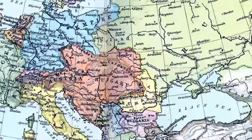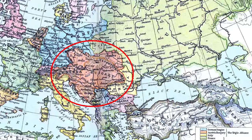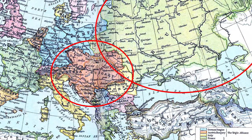Ukraine started in the 20th century as a non-existent country, meaning that it was not a sovereign nation. What is now Ukraine used to be part, in the west, of the Austro-Hungarian Empire, and the bulk of it was part of the Russian Empire.